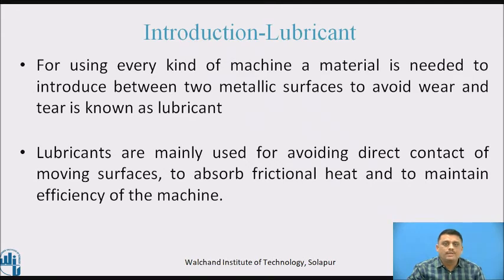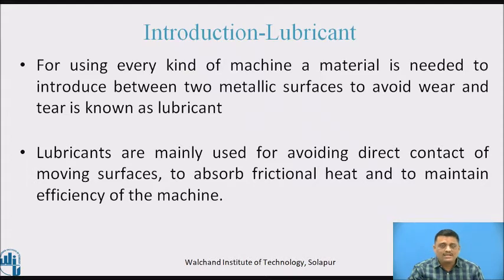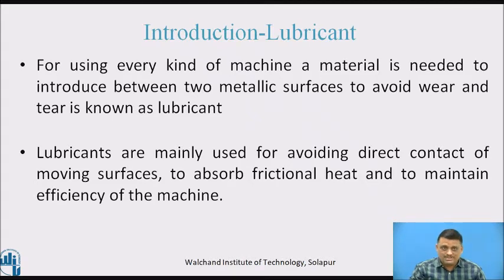What do you mean by lubricant? Lubricant is a material. For using every kind of machine, a material is needed to introduce between two metallic surfaces to avoid wear and tear — that is known as lubricant. It is a material used between two metallic surfaces to avoid their direct contact, to protect them from wear and tear. Lubricants are mainly used for avoiding direct contact of moving surfaces, to absorb frictional heat, and to maintain efficiency of the machine.